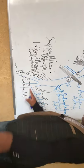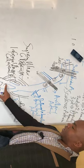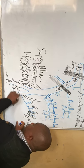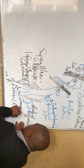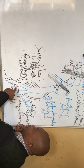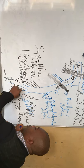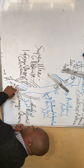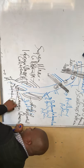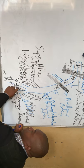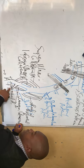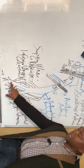Between the ulnar artery and the radial artery there is a branch called the common interosseous artery. This common interosseous artery sends out a recurrent artery that anastomoses with the profunda artery. So you have a recurrent interosseous artery. The common interosseous artery also has two branches: the anterior interosseous artery and the posterior interosseous artery.